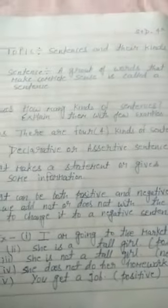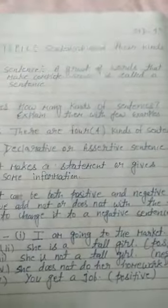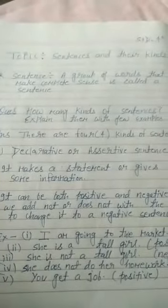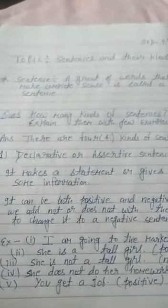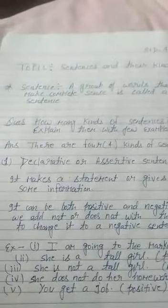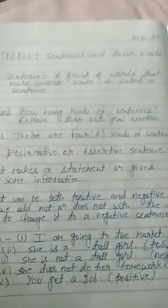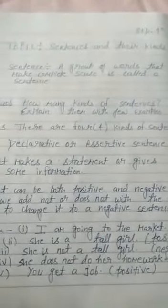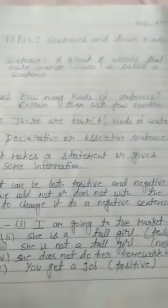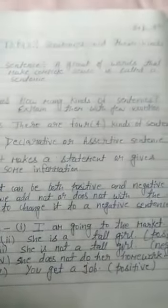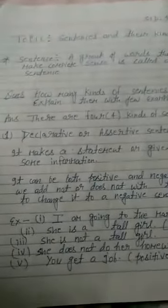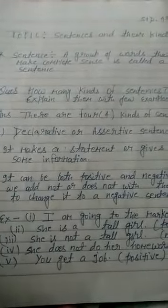Good morning to all the students watching this video. Today we are going to study about sentences and their kinds. As you can see above, the topic is written: sentences and their kinds. A group of words that makes complete sense is called a sentence. Now the question arises: how many kinds of sentences are there, and can you explain them with a few examples?